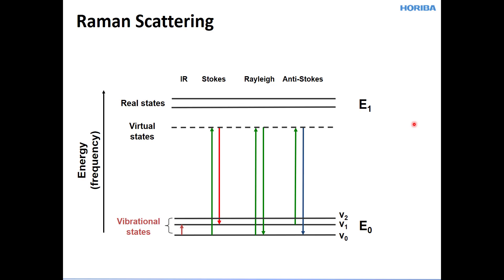And the interaction of a photon with this molecule is such that the incident photon is not absorbed. We've got two electronic states indicated here, E sub zero and E sub one, which are the ground and the first excited electronic states, respectively.